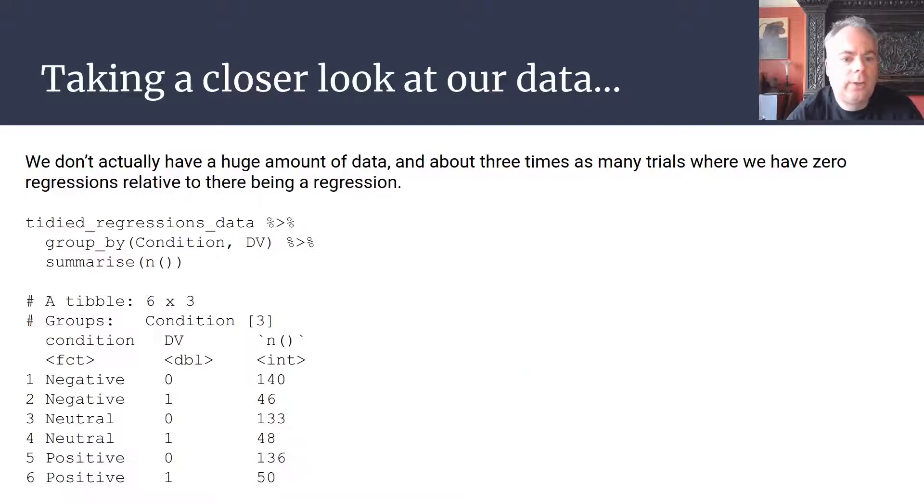If we're actually to take a closer look at our data, we realize that actually we don't have a huge amount of data to begin with. If we look at the distribution of trials where we've got zeros and trials where we've got ones, we have about three times as many trials where we have zero regressions relative to there being a regression. I've just done a little bit of extra grouping here, so I'm taking my data frame tidied_regressions_data, grouping by condition and DV, and then just asking for a summary statistic on the number of cases for each of these two combined.